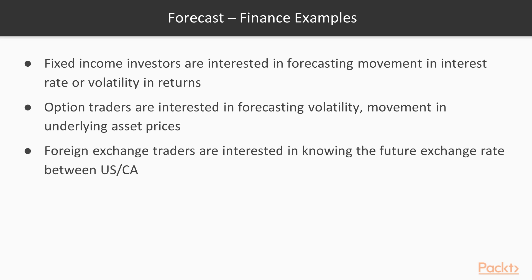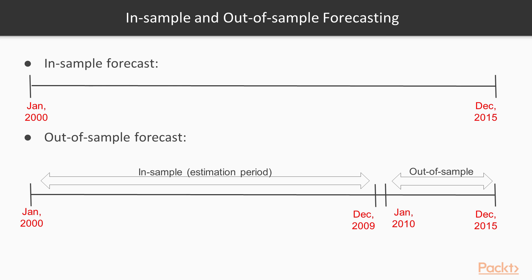To understand forecasting we need to understand some key concepts. The first is the difference between an in-sample and an out-of-sample forecast. Assuming we have data from 2000 to 2015 and we use this entire data to build a model, get our estimates, and use the model to forecast — we call this in-sample forecasting, since we build and forecast on the same data.